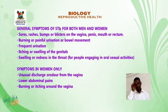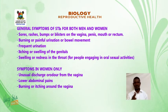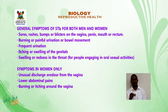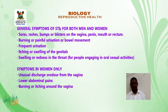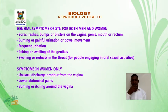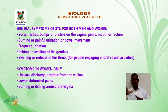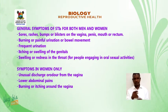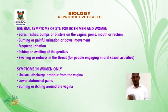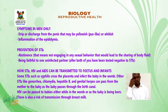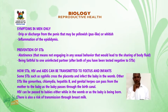General symptoms of STIs for both men and women: sores, rashes, bumps, or blisters on the vagina, penis, mouth, or rectum; burning or painful urination or bowel movement; frequent urination; itching or swelling of the genitals; and swelling or redness in the throat for people engaging in oral sexual activities. Symptoms in women only: unusual discharge or odor from the vagina, lower abdominal pain, and burning or itching around the vagina. Symptoms in men only: drip or discharge from the penis that may be yellowish, pus-like, or whitish; and inflammation of the epididymis.